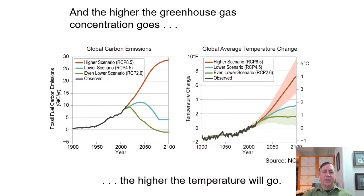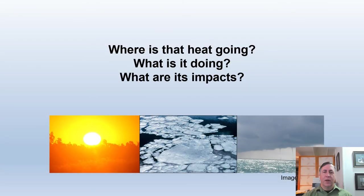The more greenhouse gases in the atmosphere, the higher the temperatures. If we stop burning fossil fuels and destroying forests, we can limit the increase to 1–2 degrees Celsius. Otherwise, it could climb up to 4–5 degrees Celsius, which would have devastating consequences. Let's talk about those consequences.